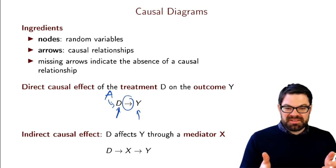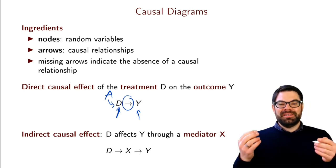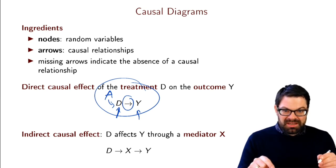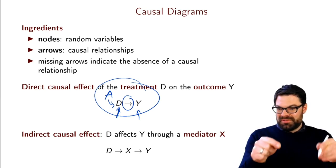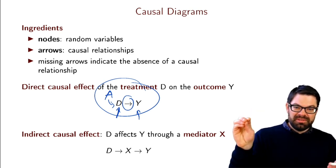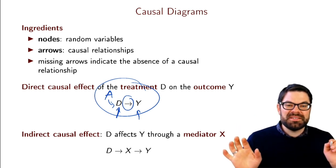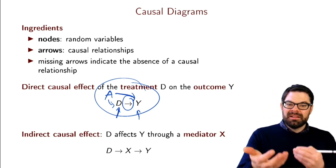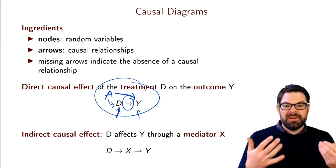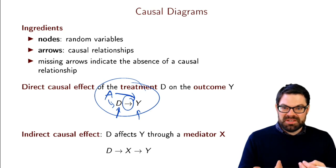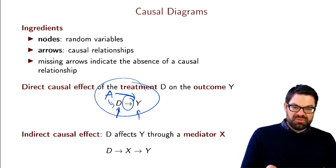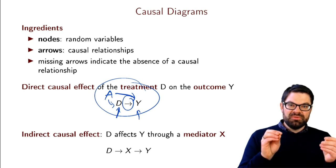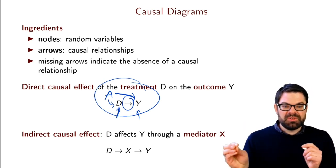Suppose there is a third variable A that affects D but there is no arrow from A to Y. That also means something: there is no direct causal relationship from A to Y, only through D. You may ask yourself, how do I know that? Well, you don't. This simple causal graph is a representation of your theory — or any researcher's theory — of how the relationships between those variables are organized. Some people may say there could be a direct effect from A to Y, and that leads to a discussion about causal mechanisms. But what it forces you as a researcher to do is take a stand on the relationships between the different variables.